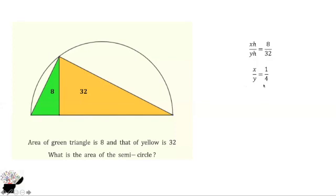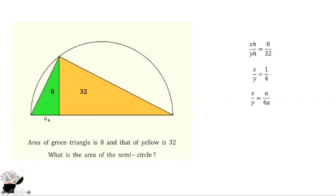Note that this is the ratio of the sides, not the actual length of the sides. So we can represent the actual lengths with a variable A, giving us A over 4A. The ratio 1 over 4 is just the ratio — we don't know the actual length. So the base of the green triangle is A and the base of the yellow triangle is 4A.